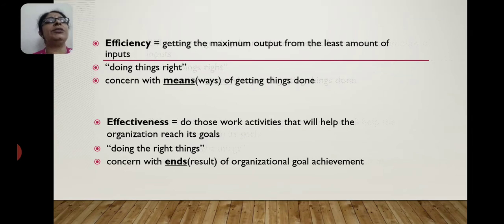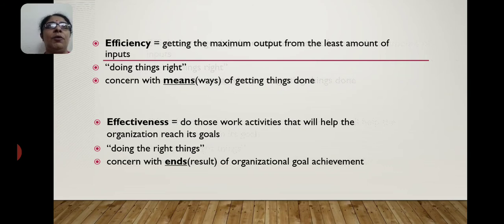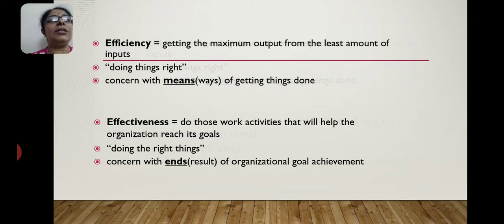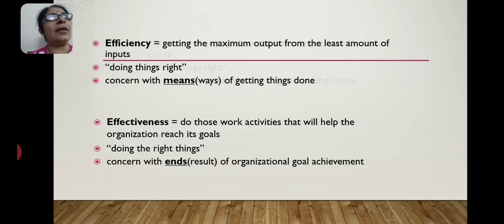There are two magical words in management: efficiency and effectiveness. Efficiency is getting maximum output from the least amount of input. Suppose koi kaam do log karte hain aur 20 log bhi wahi result dete hain — agar do logon ke saath bhi 20 logon jaisa effect aa jaye, toh hum woh kaam bahut efficiently kar rahe hain. So efficiency emphasizes doing the things in the right way — the method we choose should be correct.